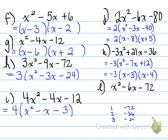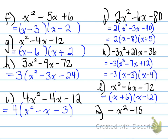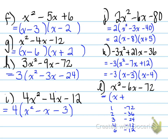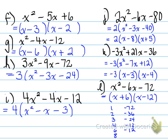x squared minus 6x minus 72. Look at all the combinations — you have multiple possibilities. The product is negative 72, so here are all the possible products that give you negative 72. It's the last one: 6 plus negative 12 gives us negative 6, and 6 times negative 12 gives us negative 72. So you have x plus 6 and x minus 12 as your factors. The other possible factors of 72 are 8 and negative 9, and that's where we would have stopped our question.